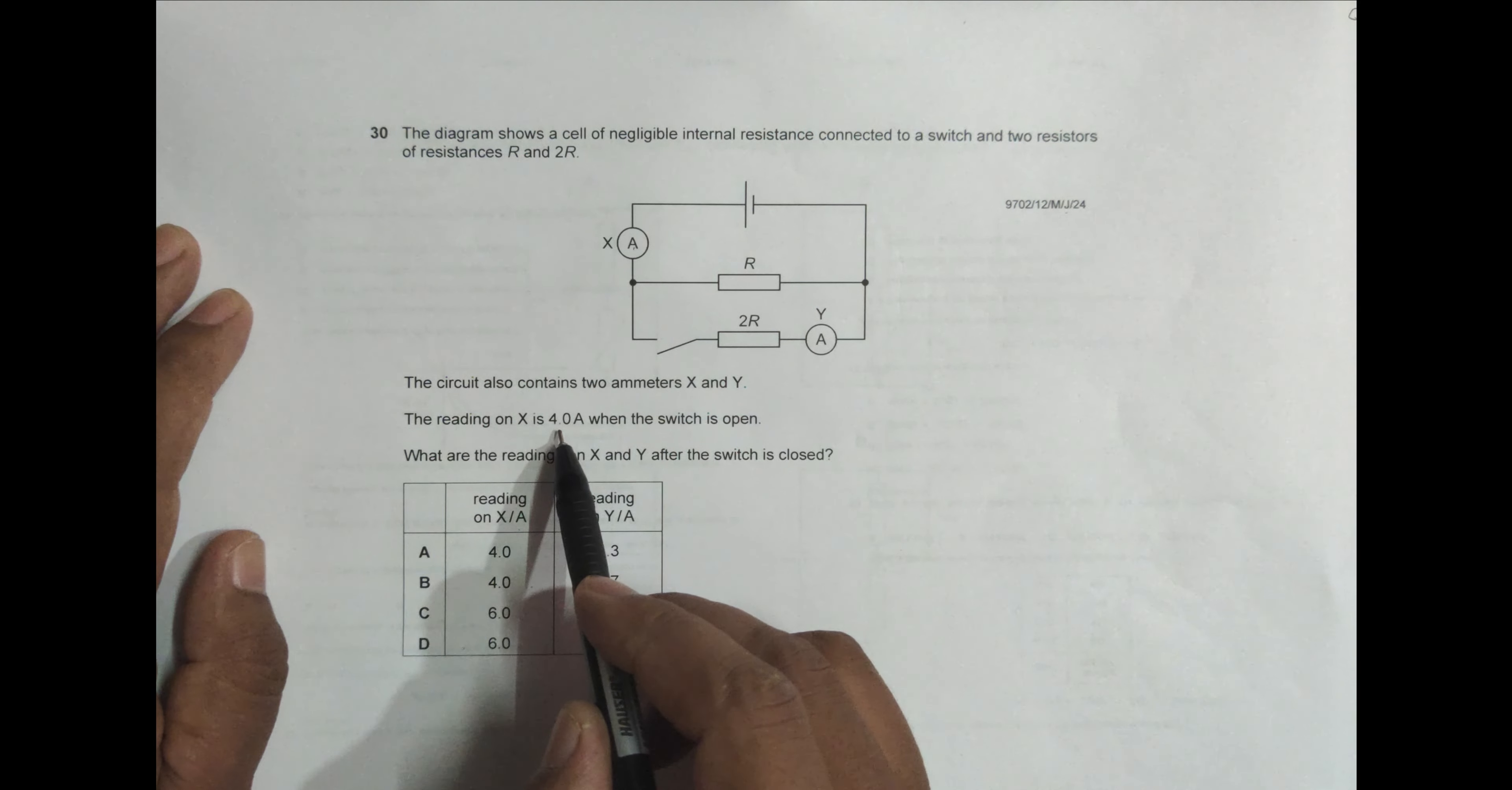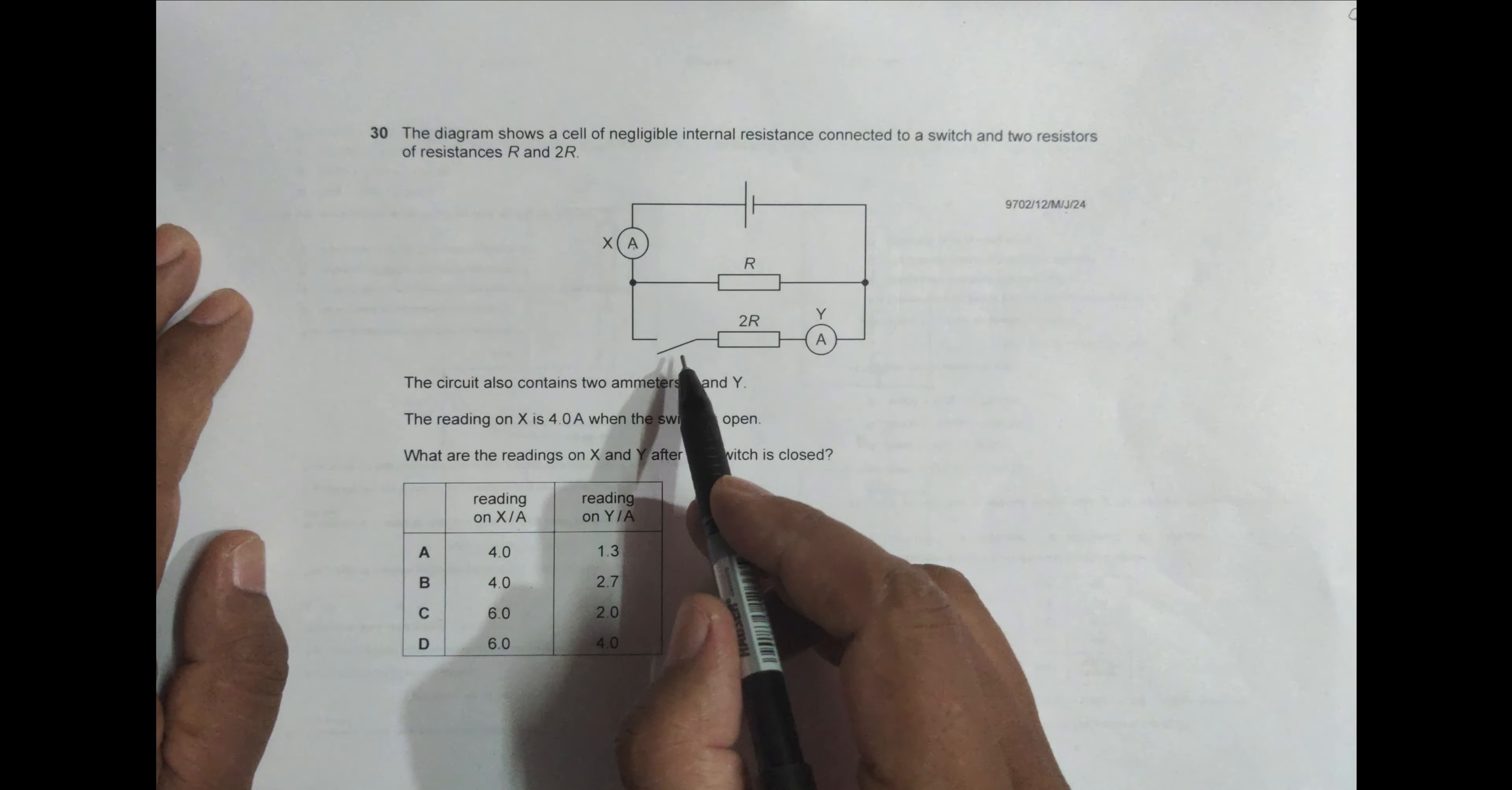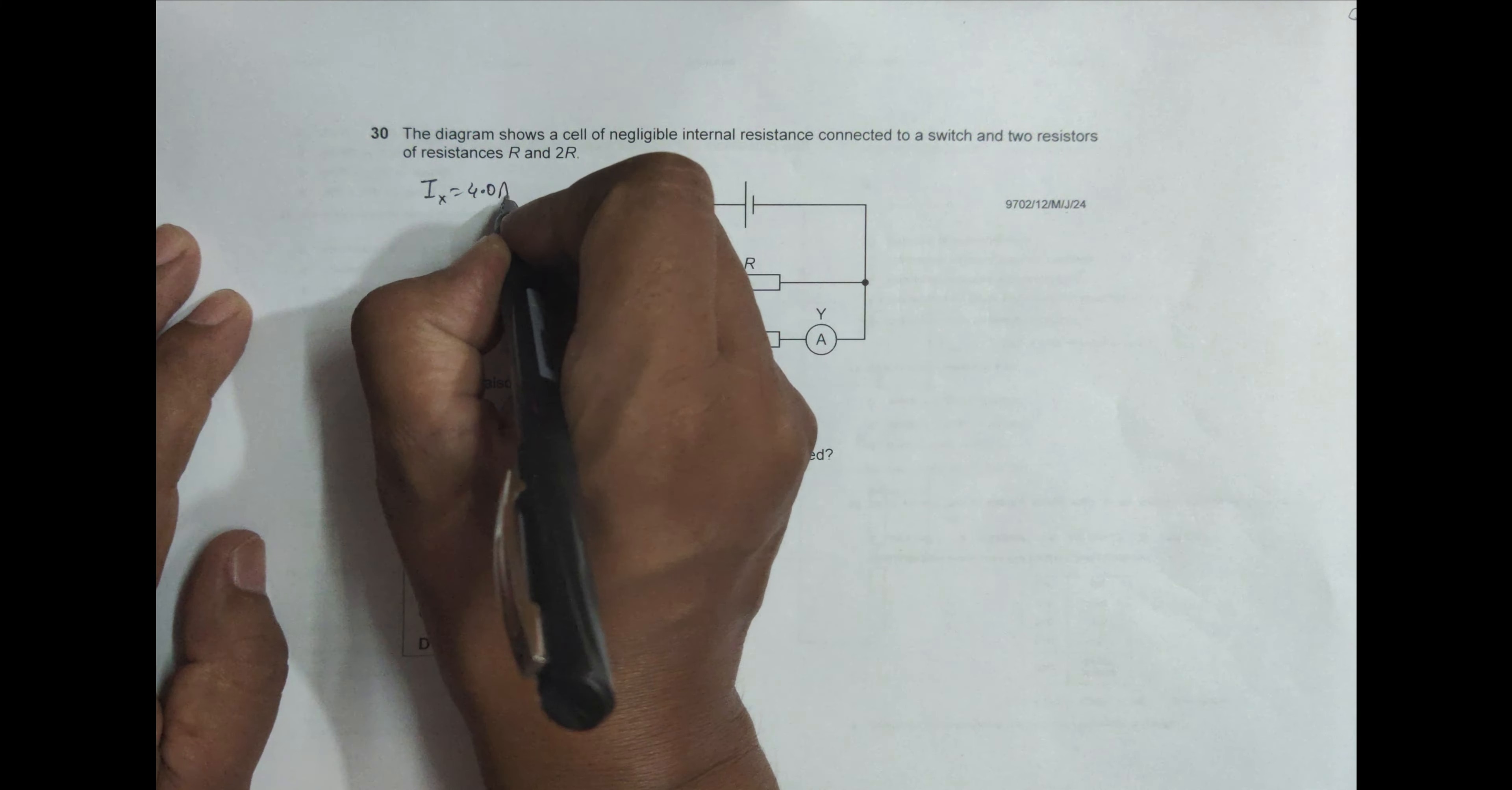The circuit also contains two ammeters X and Y. The reading on X is 4.0 ampere when the switch is open. So right now this switch is open and at that time I_X is equal to initially 4.0 amperes.